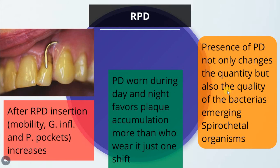Another iatrogenic factor is the removable partial denture. After removal of a partial denture, there is a high chance of mobility, gingival inflammation, and periodontal pocketing. Partial dentures worn during both day and night favor plaque accumulation more than wearing during only one period, so patients should remove the denture for several hours each day. The presence of a partial denture not only changes the quantity but also the quality — the ecology — of bacteria, encouraging more spirochete gram-negative organisms.